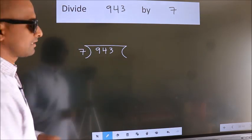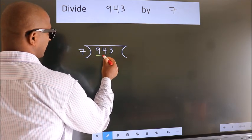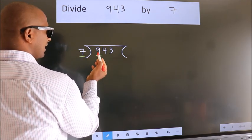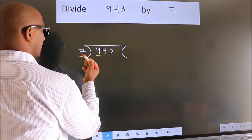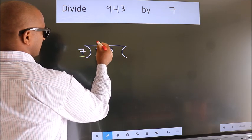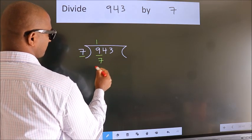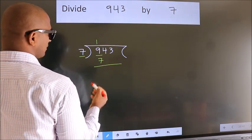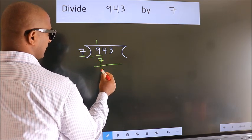Next. Here we have 9, here 7. A number close to 9 in 7 table is 7 once 7. Now, we should subtract. We get 2.